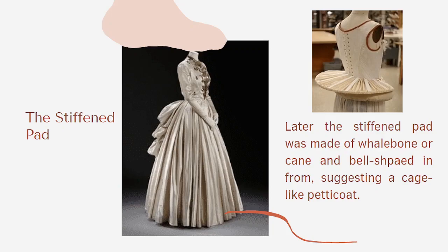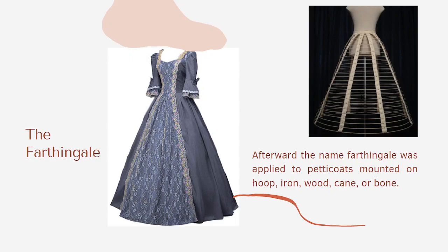Here you can see the picture of the earliest form of farthingale. Afterward, the name farthingale was applied to petticoats mounted on hoop, iron, wood, cane, or bone.